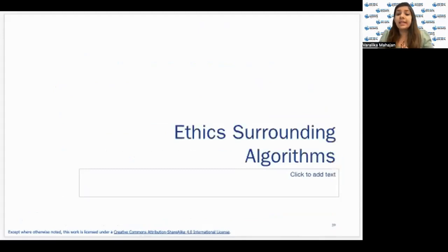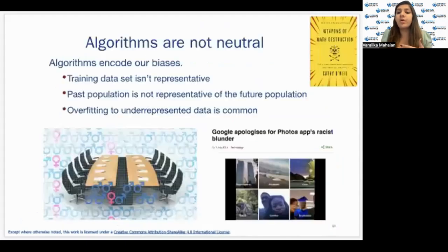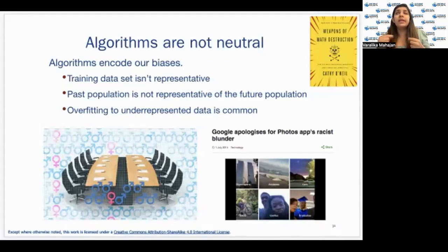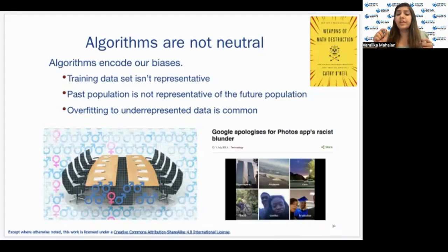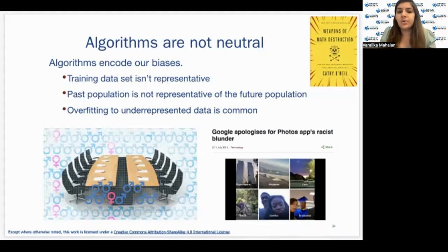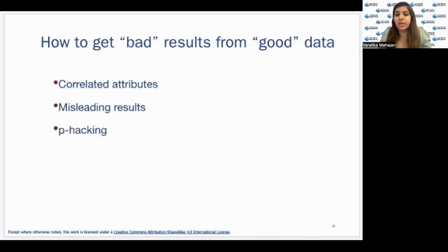Differential privacy is a concept gaining popularity and is the correct way to go about it. Now let's talk about the ethics surrounding algorithms. We use different algorithms to make future predictions with currently available data. Making these future predictions comes with high risk: past populations cannot be representative of the future, models can be overfitting due to unrepresentative data, and training data can be unrepresentative of the whole class. These are some of the algorithmic biases which can appear.